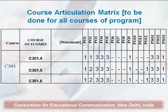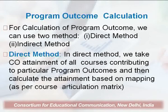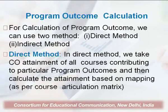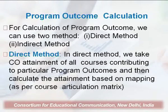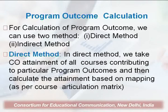This is again followed by the various C301 program outcomes. For the calculations of program outcomes, we can use two methods: the first is the direct method and the second is the indirect method. In the direct method, we take the course outcome attainment for all courses contributing to the particular program outcomes and calculate the attainment based on the mapping as per the course articulation matrix.